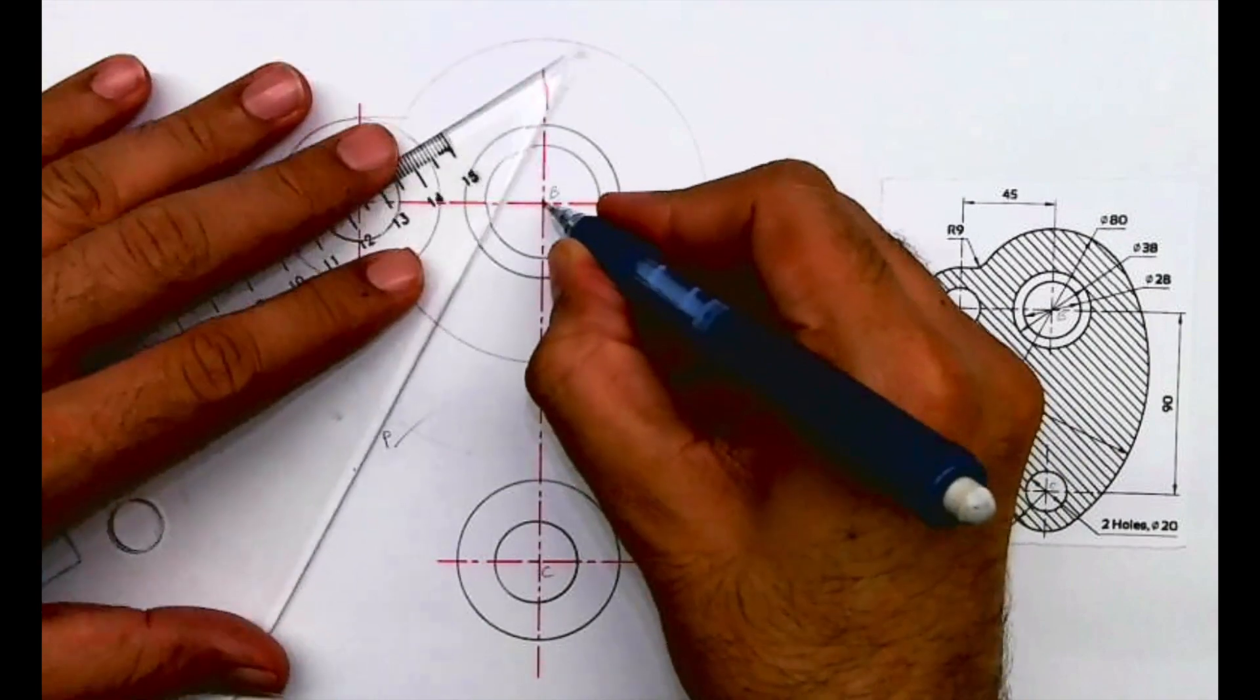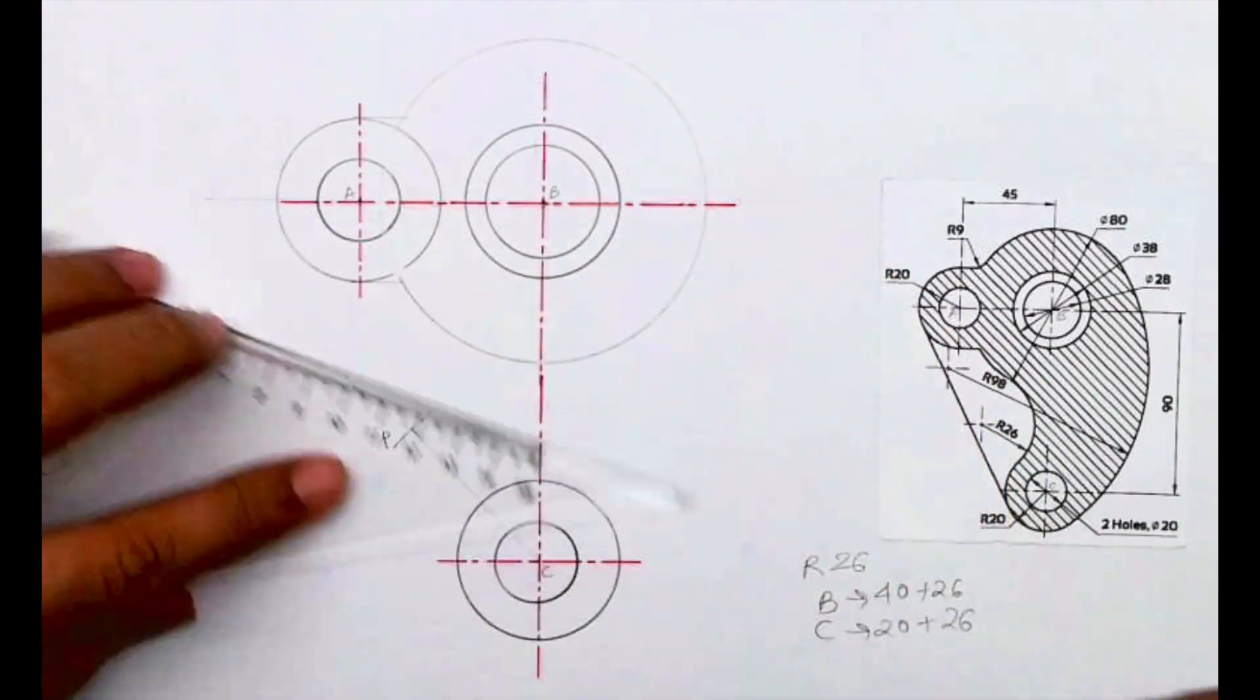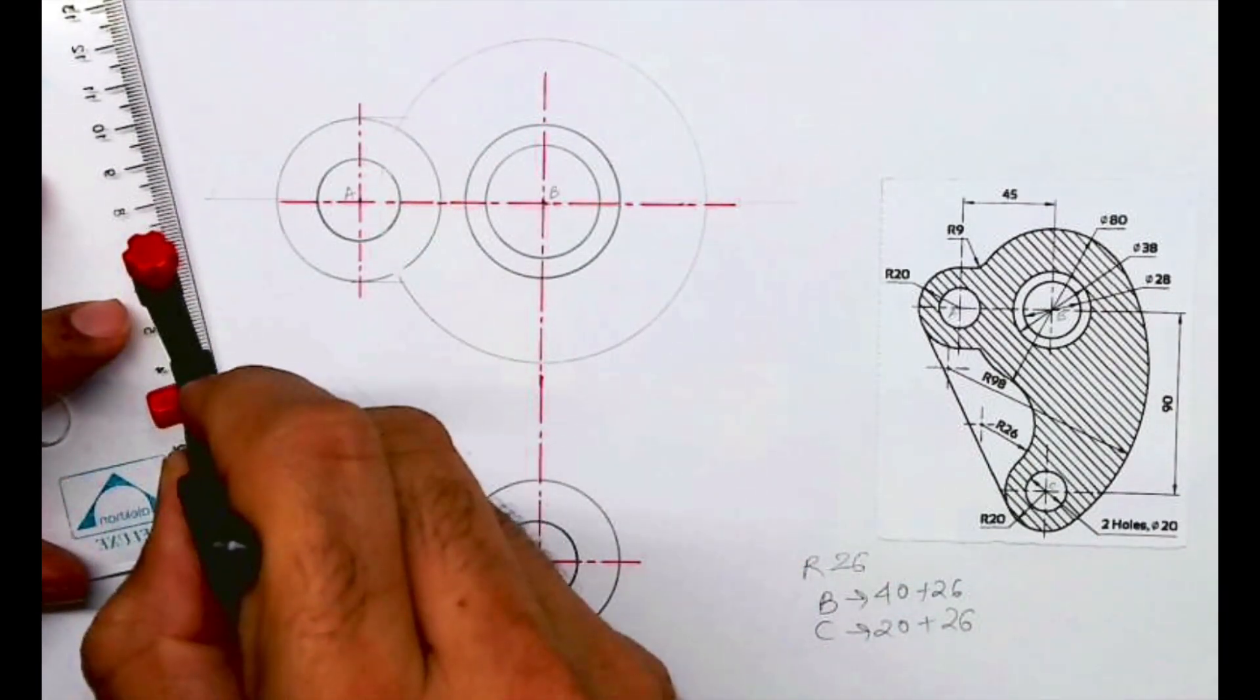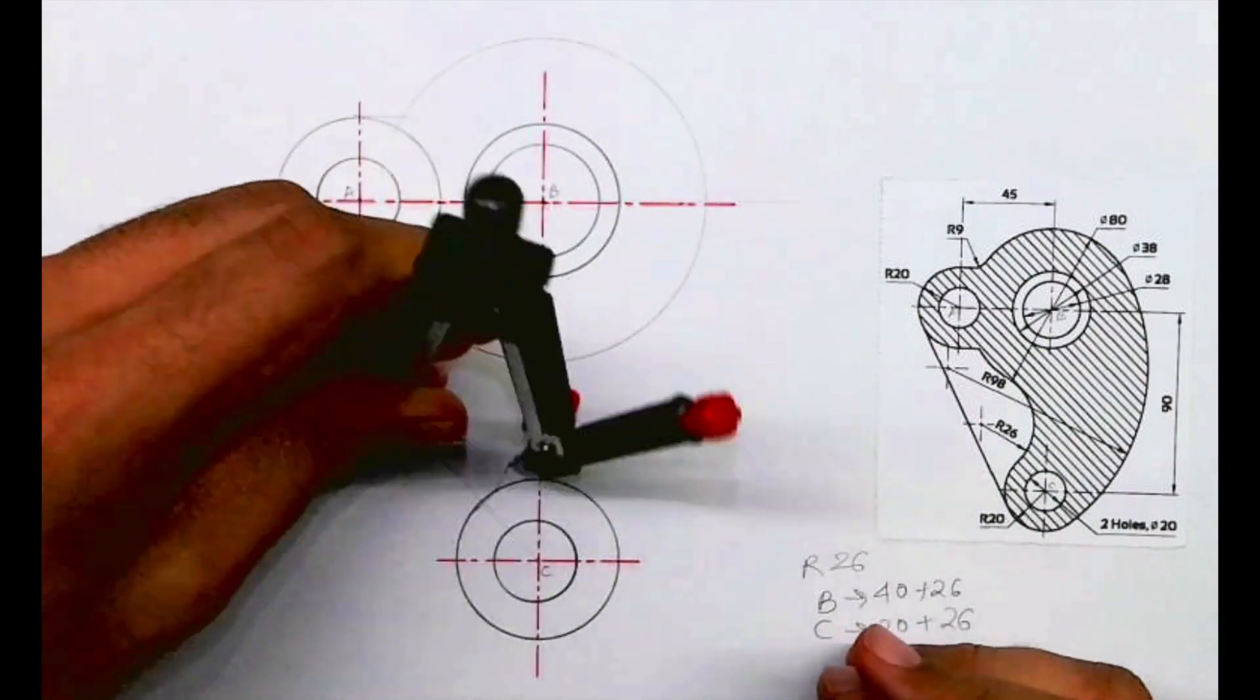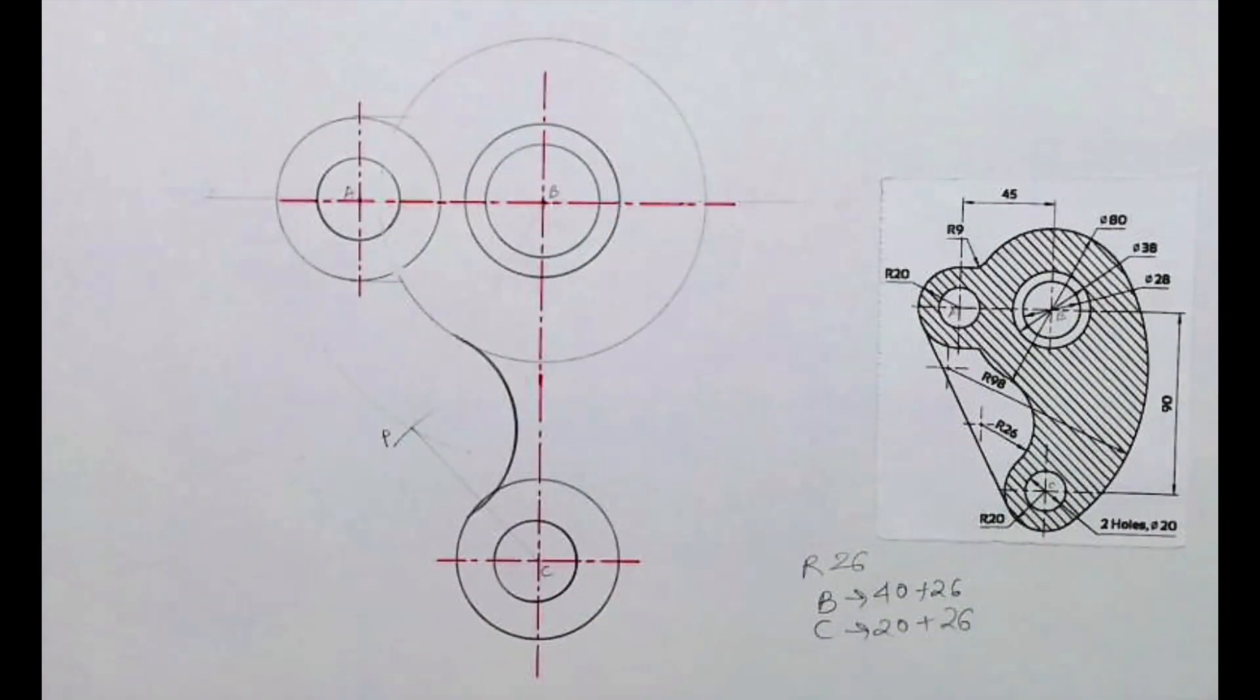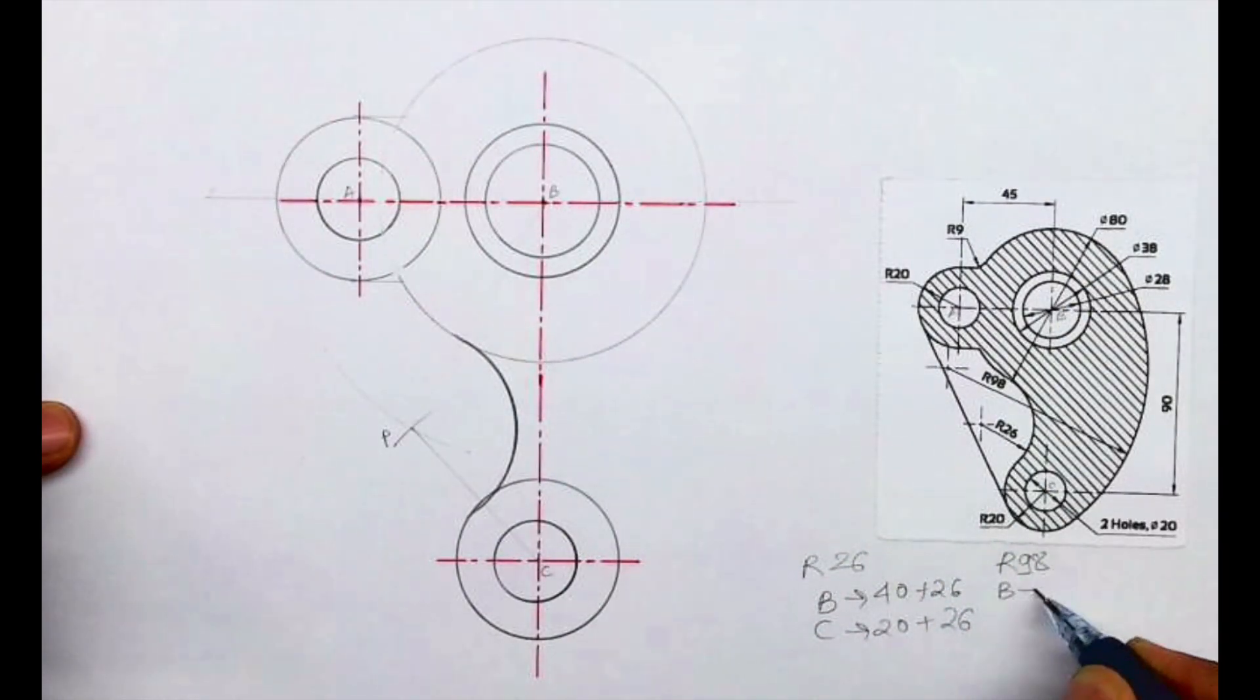Then if I want to draw radius 98, so from B you cut 98 minus 40, and from C you cut 98 minus 20.